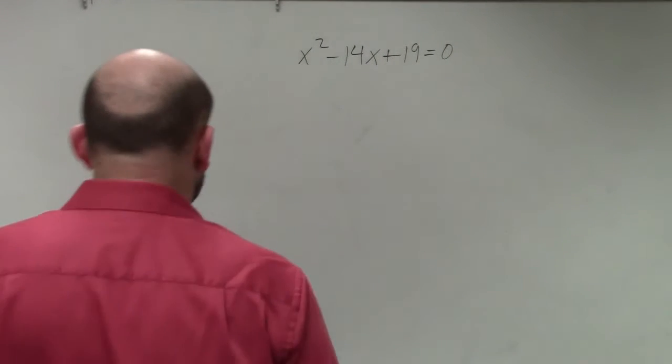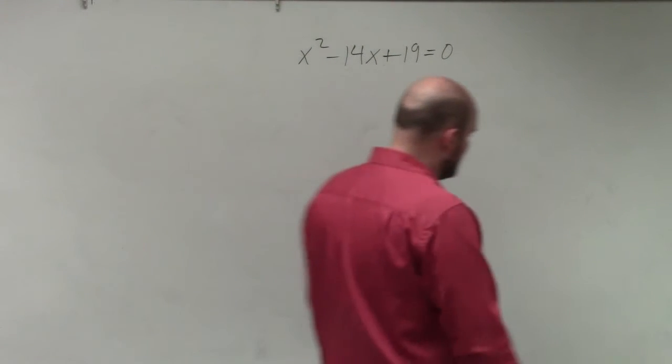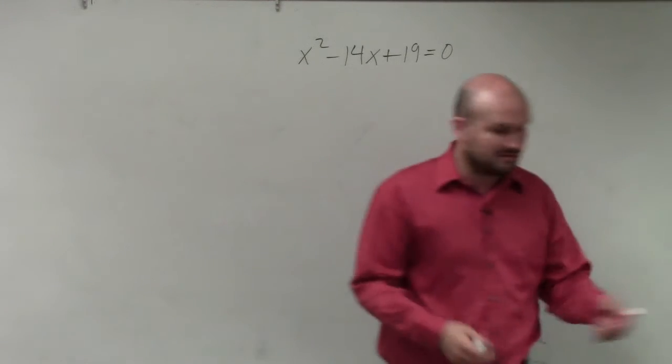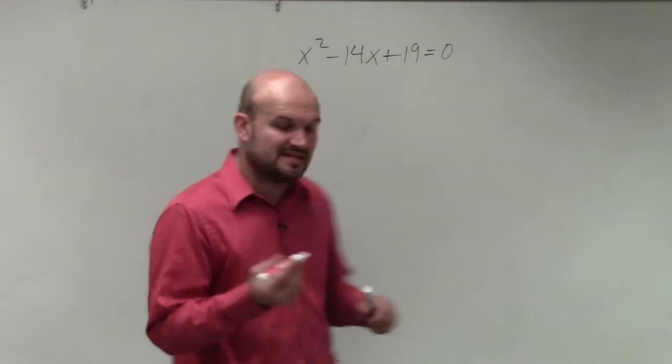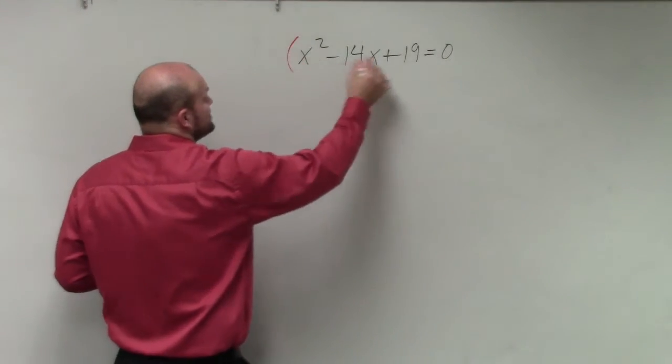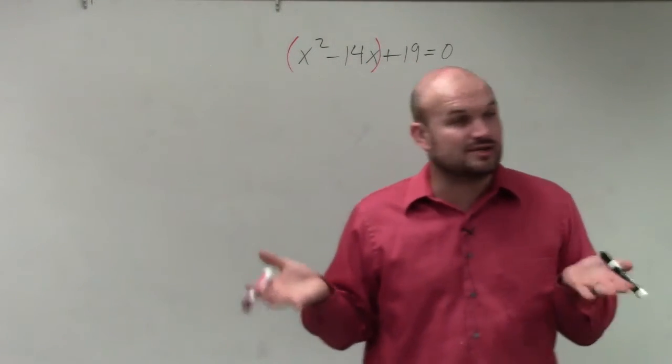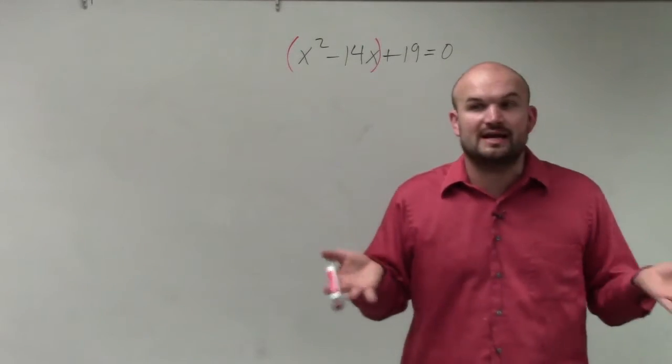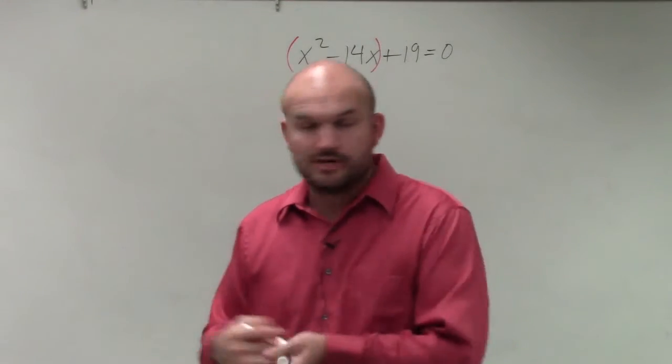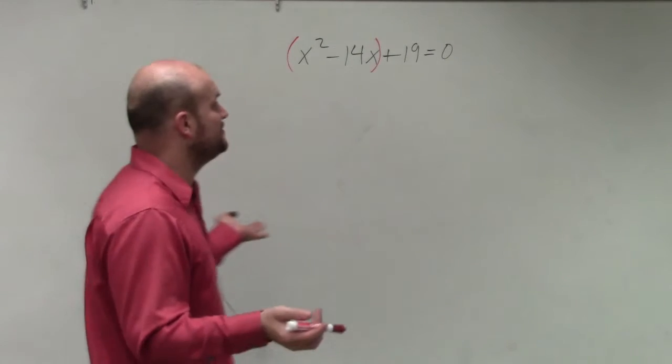All right, so in this example, ladies and gentlemen, again, all we're simply going to do is solve using completing the square. If you follow along my steps, the first step that I always told you to do is just group the first two terms. The two terms that we're going to group is what we're going to create as our perfect square trinomial. So hopefully the first step you can always do.